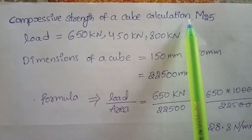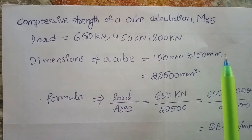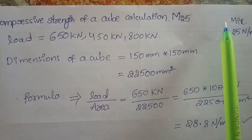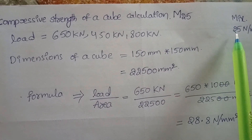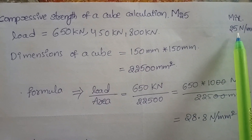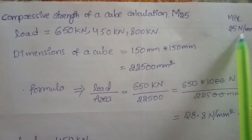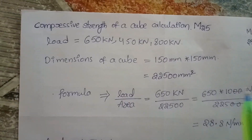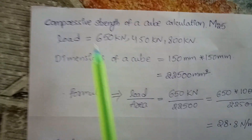Compressor strength of a cube calculation: M25. M means mix, 25 means the compressor strength of a cube is 25 N per mm squared after 28 days curing.